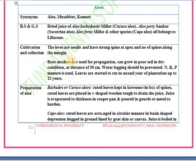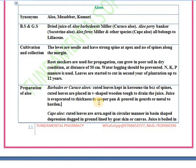Root suckers are used for propagation. It can grow in poor soil and dry conditions. You have to plant at a distance of 50 centimeters. Water logging should be avoided in cultivation of aloe. You have to manure your field properly with sodium, potassium, and phosphorus. Leaves are started to cut in the second year of plantation and you can cut leaves up to 12 years.